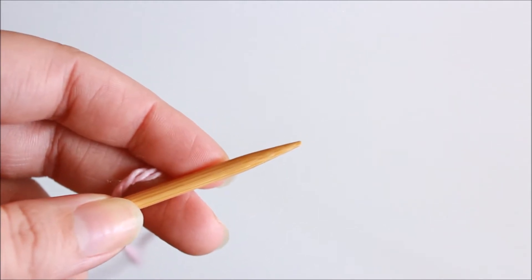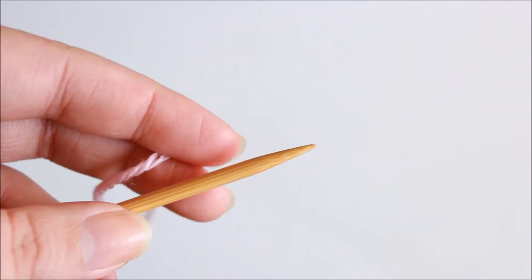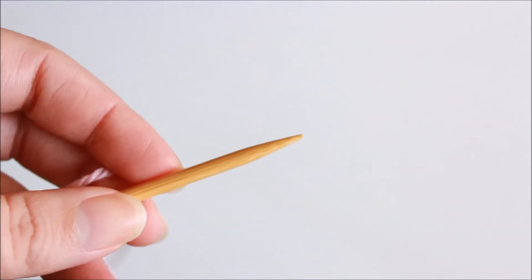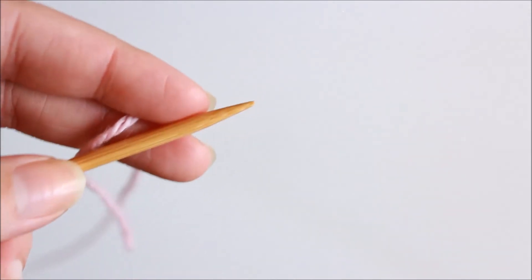The only thing we're going to do differently is we're going to alternate between inserting our right hand needle knitwise and purlwise between the stitches on the left hand needle to create our new stitches. So we'll get straight into it.